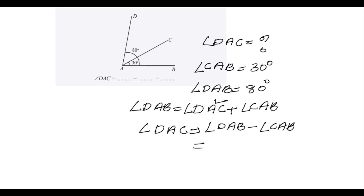Angle DAB is given in the question, that is 80 degrees. Angle CAB is also given in the question, which is 30 degrees. So 80 minus 30 gives us 50 degrees.